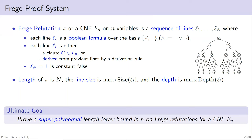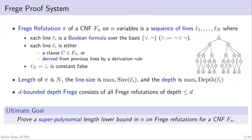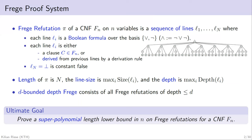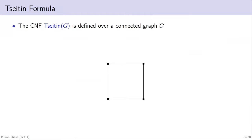A major open problem in proof complexity is to prove super-polynomial lower bounds for the Frege proof system for CNF. I'm a bit pessimistic and do not think we'll prove this anytime soon. So instead we limit our proof system further: we only consider proofs where every formula in the proof is bounded in depth D. This is the Bounded Depth Frege proof system that we will study. And now I have to introduce the formula that we're working with — this is the Tseitin formula. It's a CNF defined over a connected graph G, with Boolean variables associated with each edge.